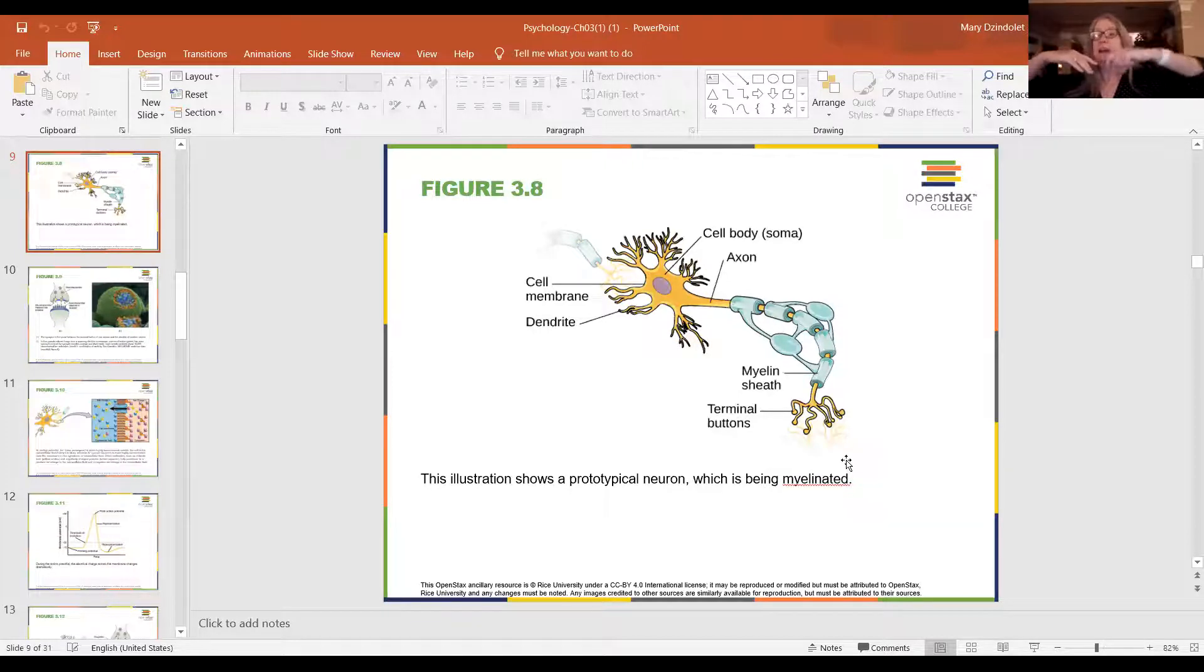The neurotransmitter sort of is in that synapse, that space between the terminal buttons of your first neuron and the dendrites of the second neuron. And in that synapse, in that space, out sort of oozes the neurotransmitter, these chemicals. If the chemical reaches the dendrites of the next neuron, and if on those dendrites there's a receptor that can accept that neurotransmitter, then the neurotransmitter will be accepted by the next neuron.